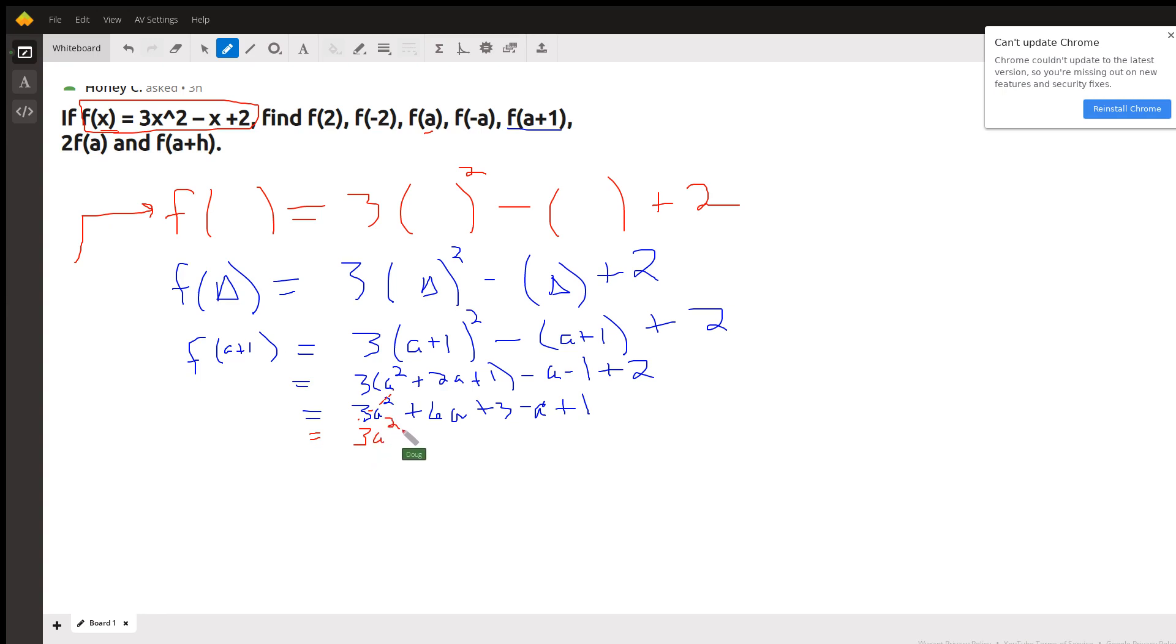3a squared. 6a and minus a combine to plus 5a. And the 3 plus 1 combine to 4. There you go.